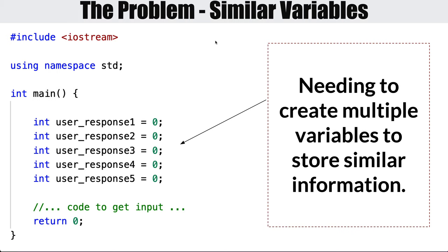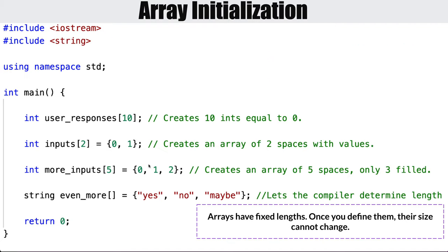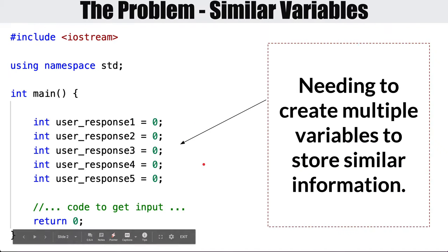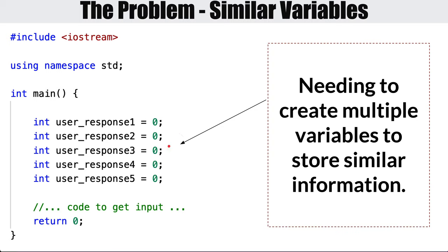Let's start with the problem. Up until now, if you wanted to take multiple user responses, you had to create different variables — like user response one or user response two. Start thinking about a video game with all its variables: attack, health, armor for maybe 100 players. Are you really going to manually create all those variables? That's what really brings us to arrays — they help us deal with situations where we need to store many related pieces of data.